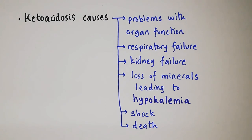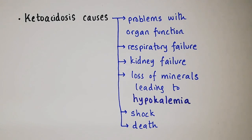Ketoacidosis causes problems with organ function, including respiratory failure, kidney failure, loss of minerals leading to hypokalemia — which is the loss of potassium ions — shock, and even death. This occurs because our organs try to remove the excess acid, and ketoacidosis puts too much pressure on these organs, leading to these complications.